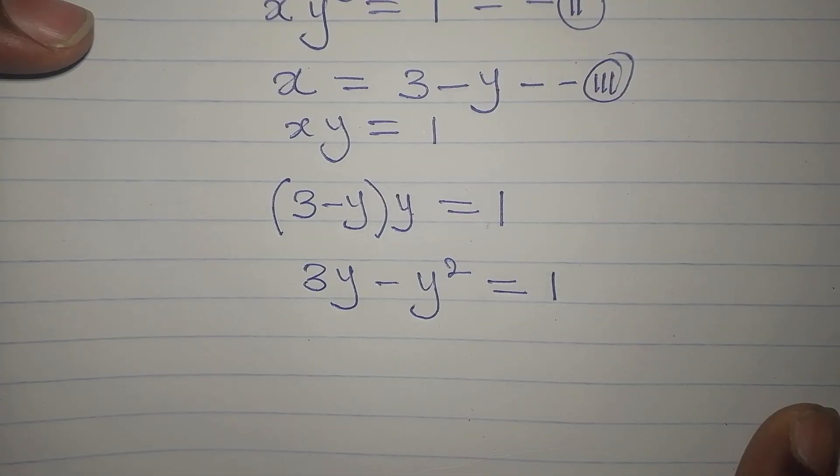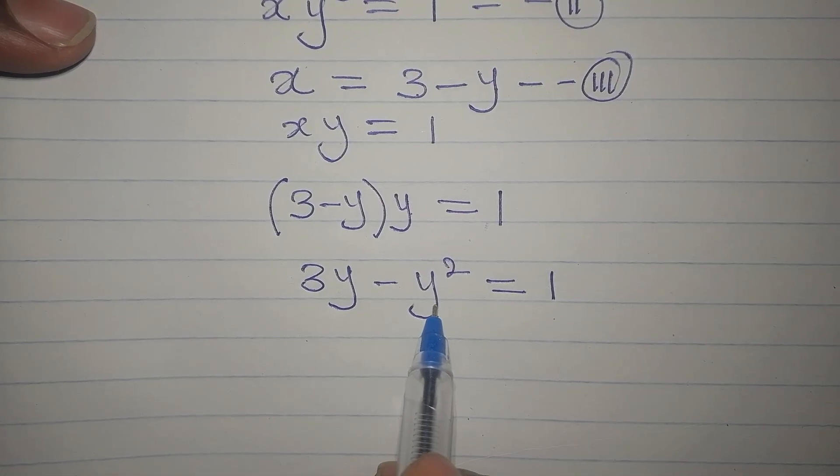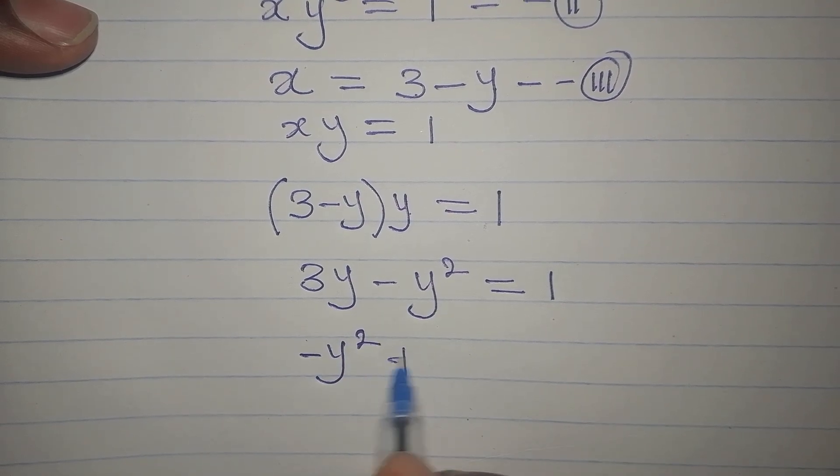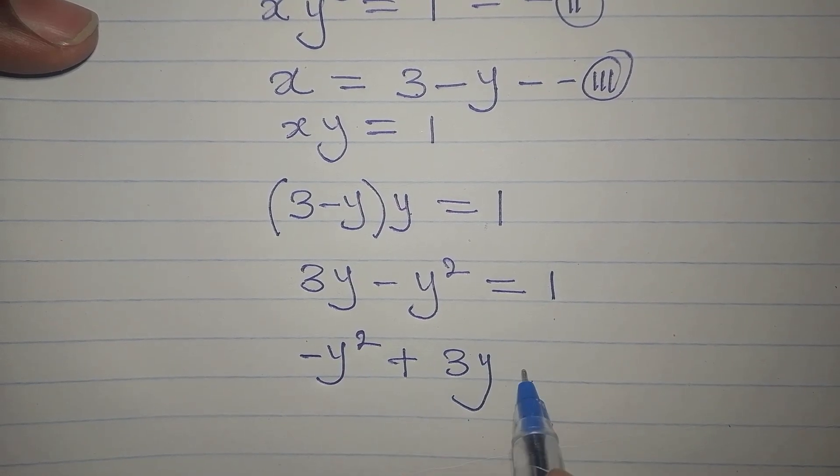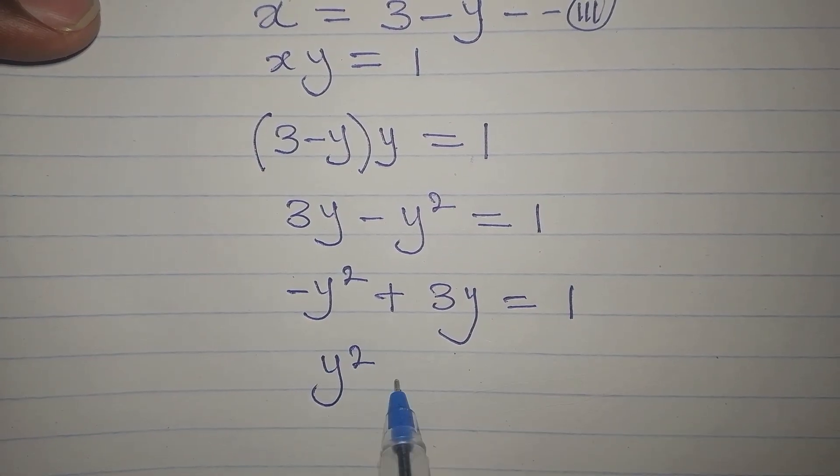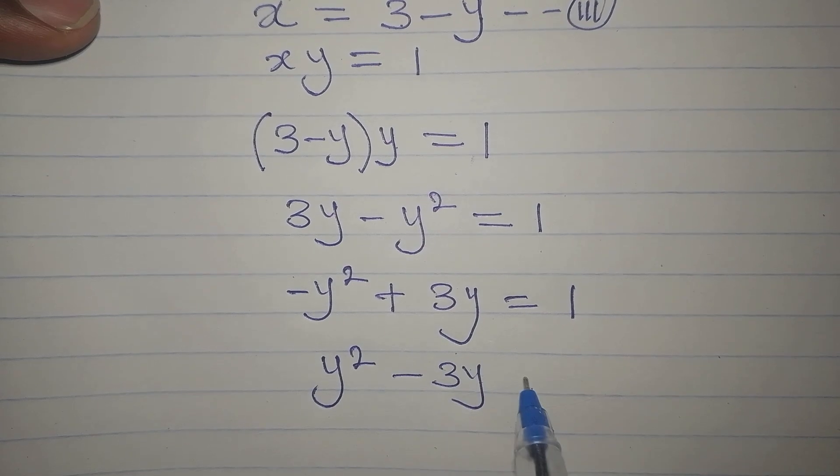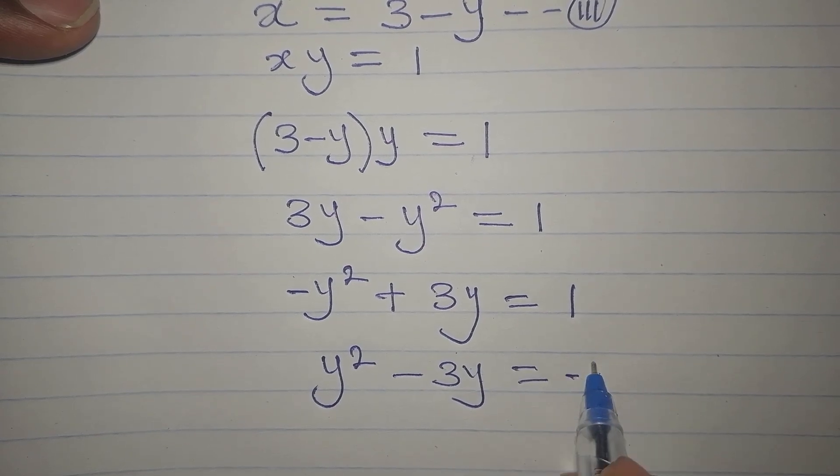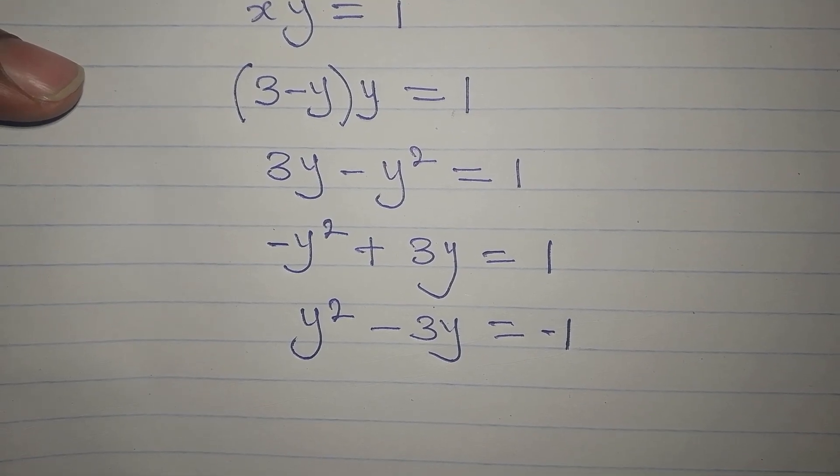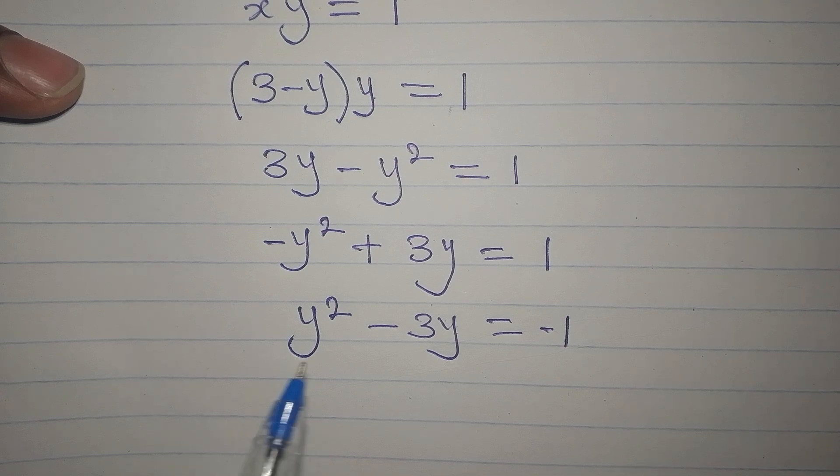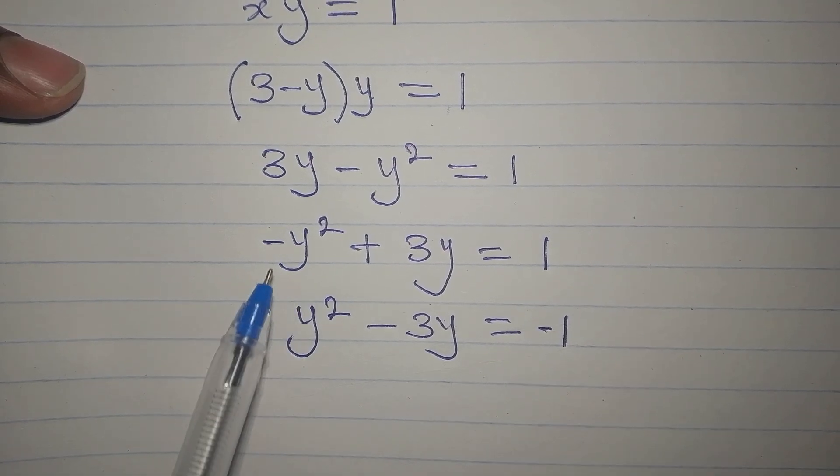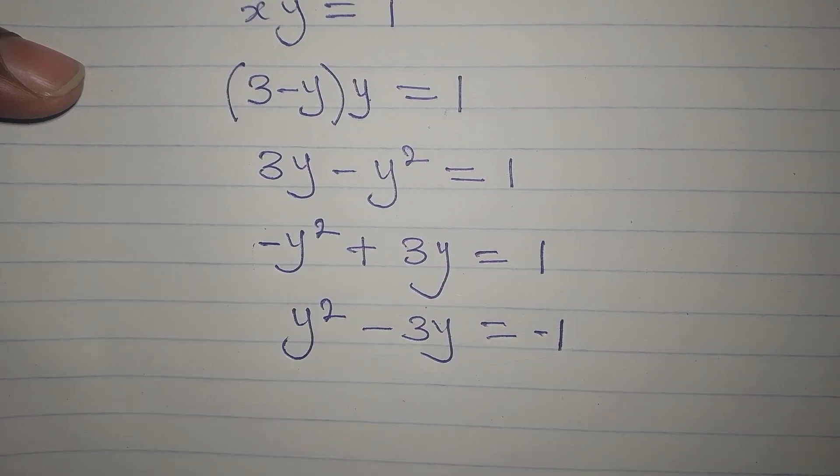There will be need for us to rearrange so that this one will come first. This is minus y squared plus 3y equals 1. Now, y squared minus 3y equals minus 1. What I did is to multiply everything by negative 1 so that this first term here will become positive.